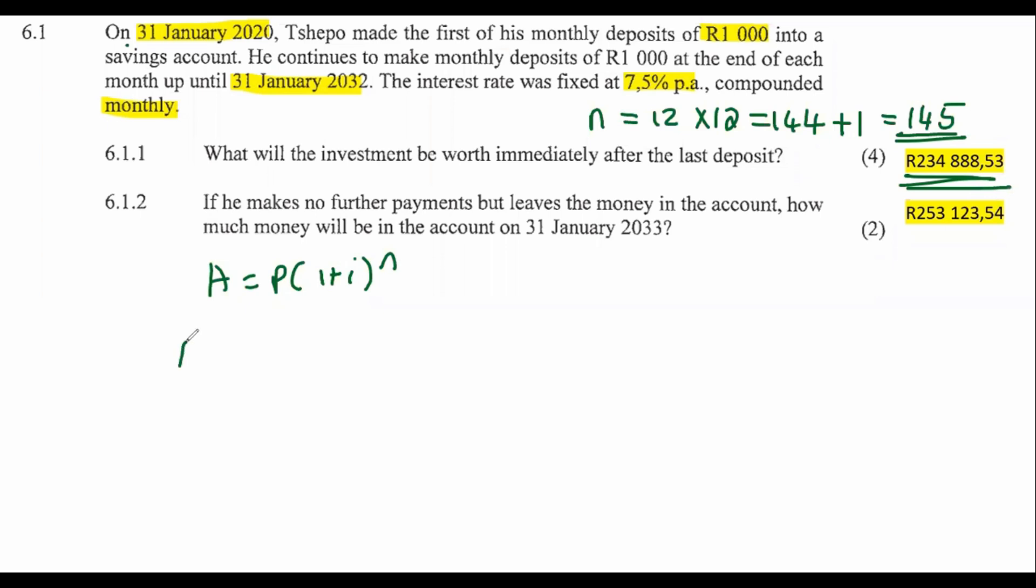So he's going to have a total on 31 January 2032 of 234,888.53 Rand. Then he's going to leave that in the bank for another one year from 31 January 2032 to 31 January 2033. Now I've probably made some of you very cautious about how many months is that? Is that 12 or is that 13? Well, now we need to be even more careful. So check this out. If I draw a timeline...